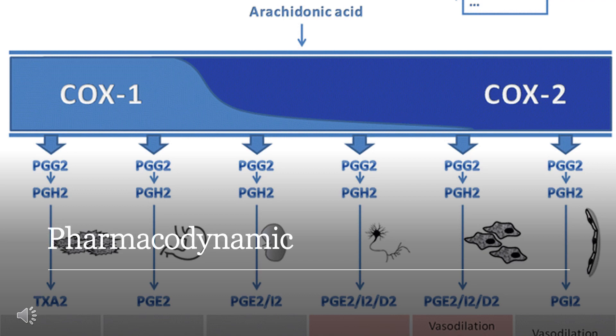Flurbiprofen has the same chemical structure and pharmacology as fenoprofen, ibuprofen, and ketoprofen, and has similar pharmacological actions to other prototypical NSAIDs, including anti-inflammatory, analgesic, and antipyretic activities. The commercially available Flurbiprofen is a racemic mixture of S- and R-enantiomers. The S-enantiomer appears to possess most of the anti-inflammatory activity, while both enantiomers may possess analgesic activity.